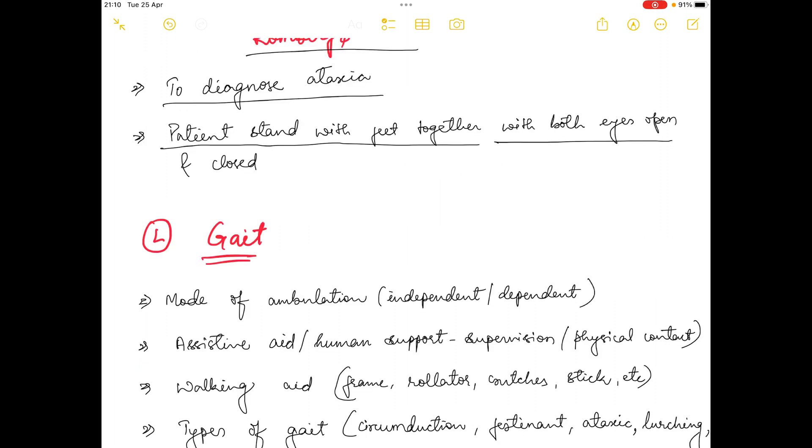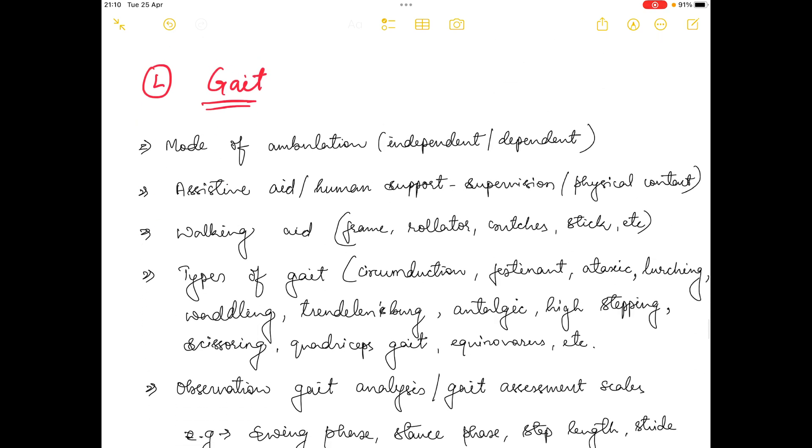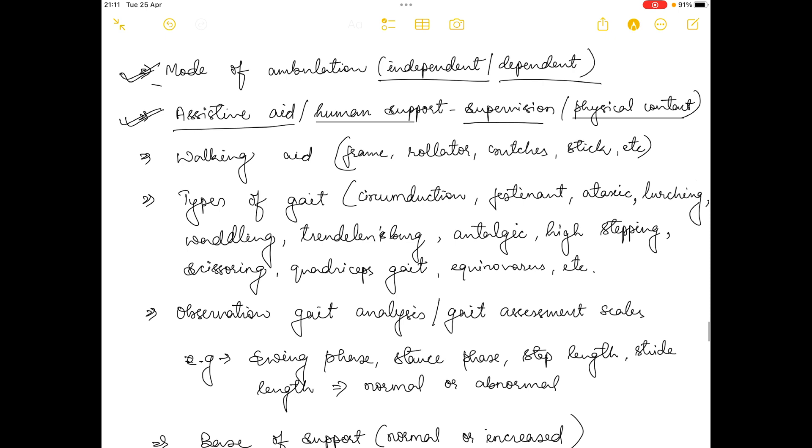Now we'll talk about gait. In gait there are various things you could assess, such as mode of ambulation - whether the patient is independent or dependent on someone to walk. Next is if the patient has any assistive aid or any kind of human support. Human support could be supervision or any kind of physical contact. The third thing is walking aid - you could examine if the person is using frame, rollator, crutches, stick, etc.